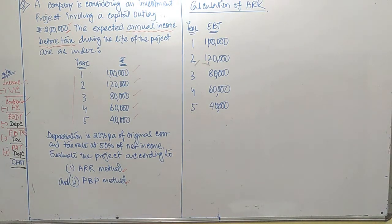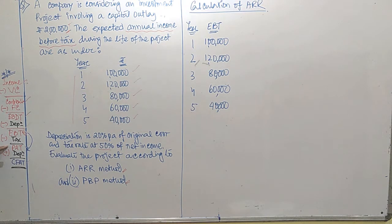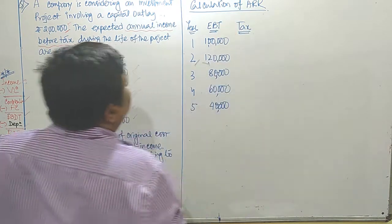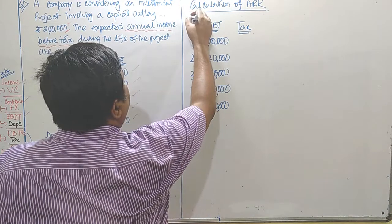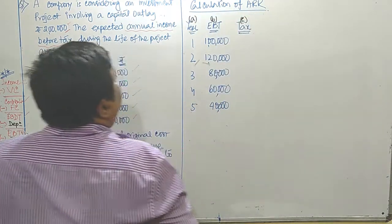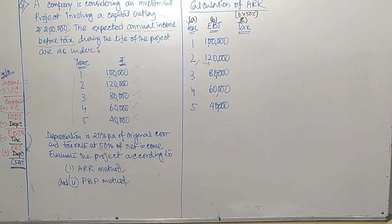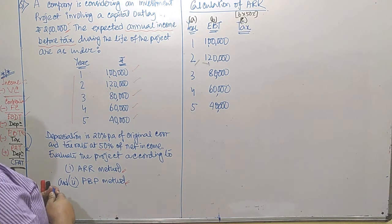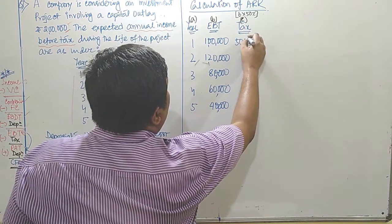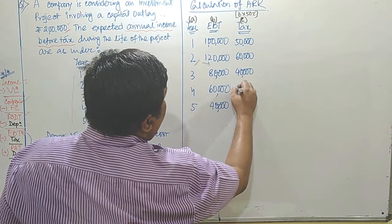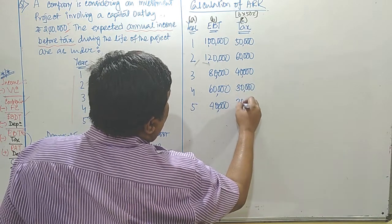EBT is available to us. We need to process till PAT for ARR — from EBT we deduct tax. The tax rate given in the question is 50 percent, so column B into 50 percent: 1 lakh into 50 percent is 50,000; 1 lakh 20 into 50 percent is 60,000; 80,000 into 50 percent is 40,000; 60,000 into 50 percent is 30,000; 40,000 into 50 percent is 20,000.